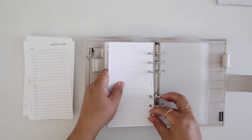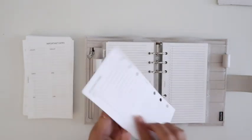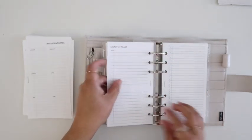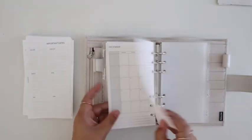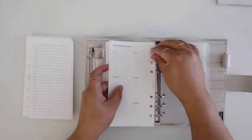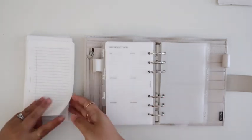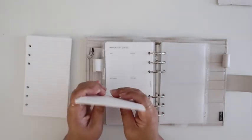But right after the current month, which right now is June, I add this monthly task insert, which I put some tasks for the shop there. And then at the back of my monthly inserts, I keep that important dates insert, which I use for pre-planning the following year.